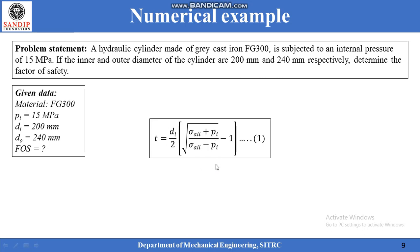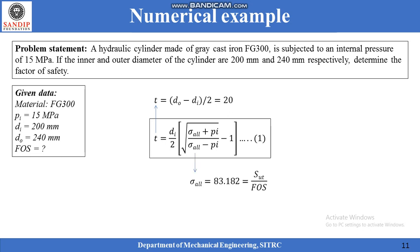Hence, we have to use Lame's equation to solve this problem. In this equation, Di and pi are known quantities, and thickness can be calculated as (Do − Di) / 2, which yields the value of 20 mm. After substituting all known quantities, allowable stress can be calculated as 83.182 MPa, which equals ultimate tensile strength divided by factor of safety. Putting ultimate tensile strength as 300 MPa, the factor of safety is calculated as 3.6. Thus we can solve the problem using Lame's equation.